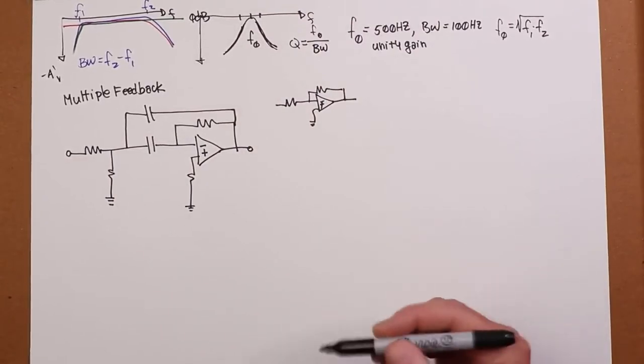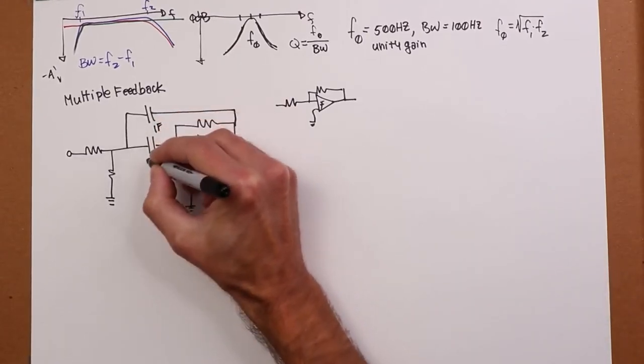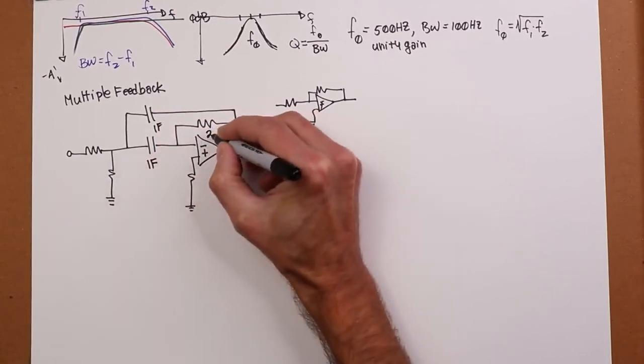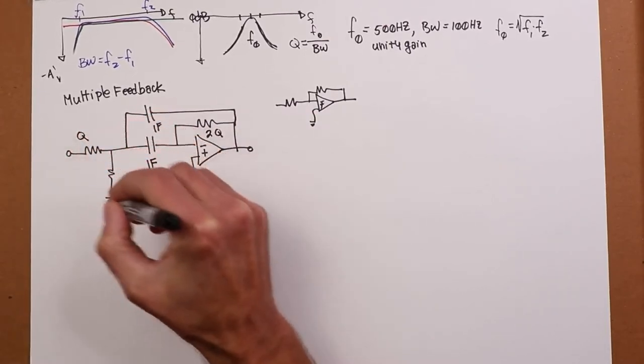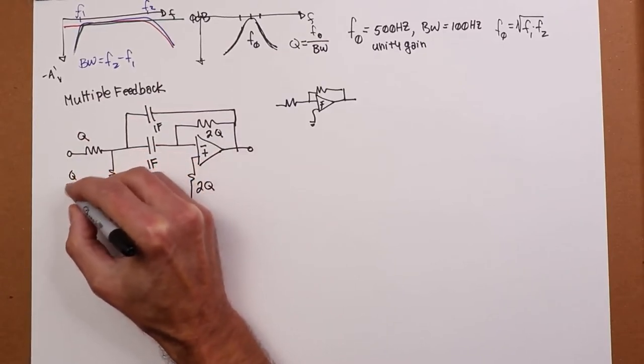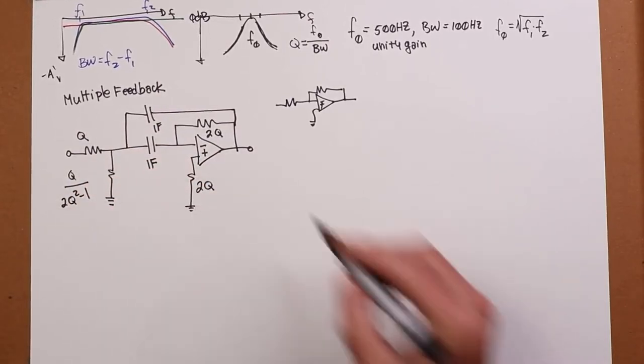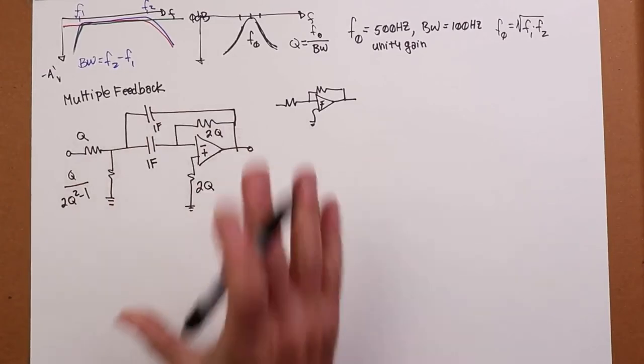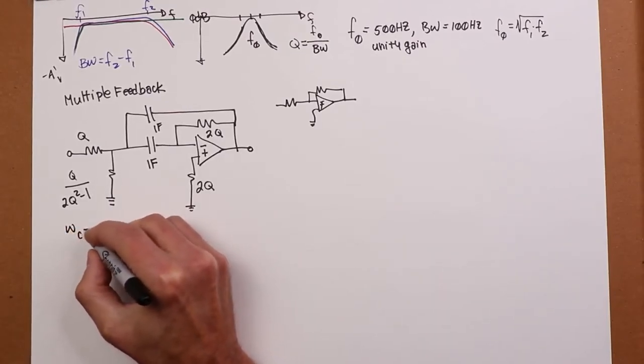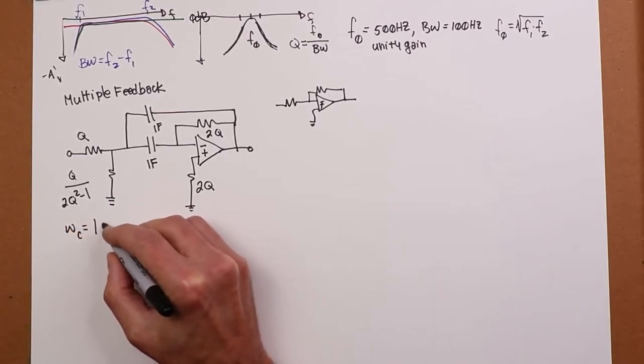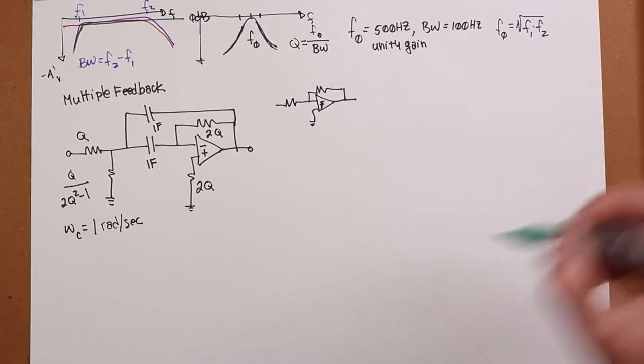So the template gives you, again, these kind of crazy values that we've come to be used to. One farad, one farad. This resistor is 2 times Q, as is this one. And then over here we have a Q value, and then this is Q. This resistor right here is Q divided by 2Q squared minus 1. So there's derivations of these in the text, but that's the template. So that's our multiple feedback filter. And, of course, like all the templates, this is tuned with a critical frequency of one radian per second.